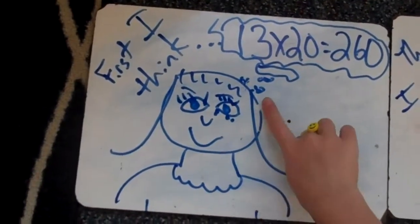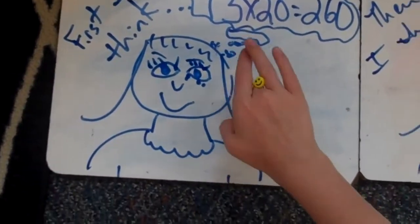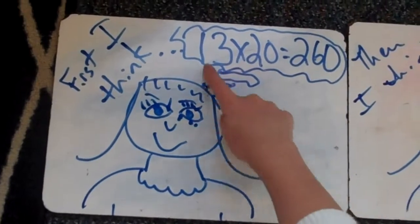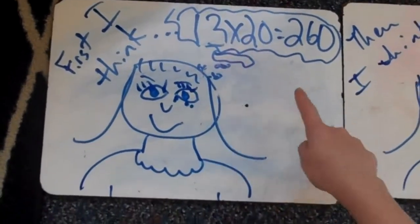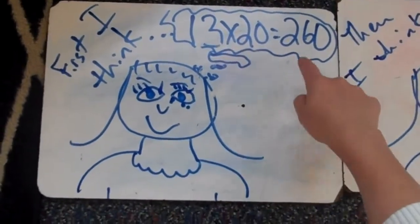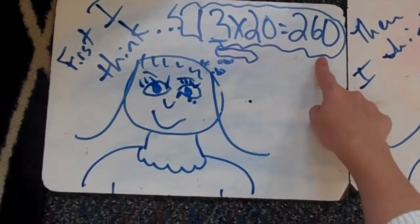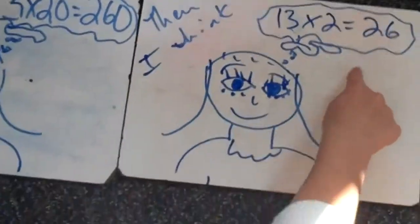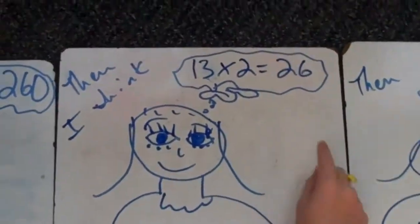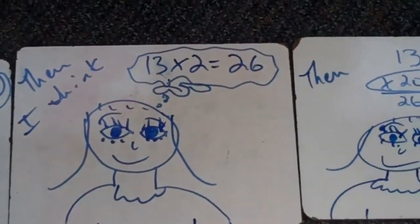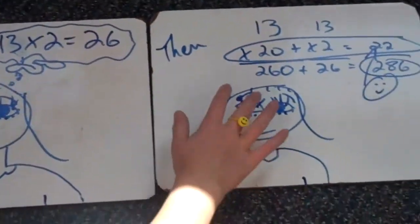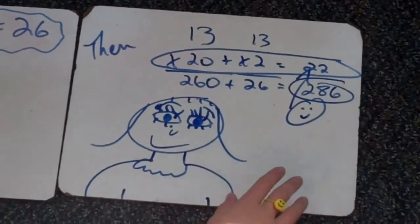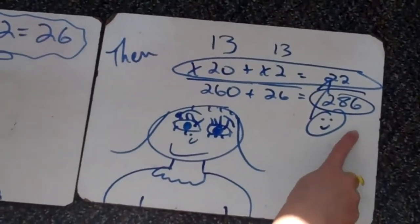So I think in my speech bubble that 13 times 20 equals 260. Then I think 13 times 2 equals 26. Then I add those together and it equals 286.